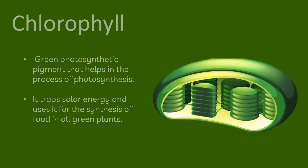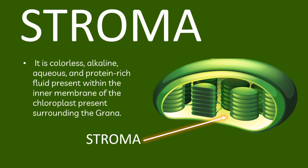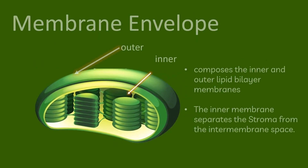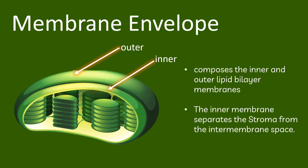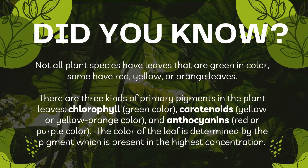On the other hand, stroma is similar to the cytoplasm in the cell where all the organelles are embedded. It is a colorless, alkaline, aqueous, and protein-rich fluid present within the inner membrane of the chloroplasts, surrounding the grana. The stroma functions by connecting the stacks of the thylakoid membranes. The membrane envelope is composed of the inner and outer lipid bilayer membranes. The inner membrane separates the stroma from the intermembrane space, which is the space between the inner and outer membranes.